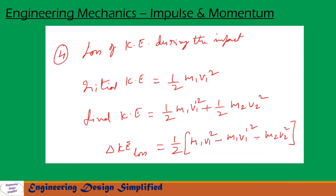Now let us see the loss of kinetic energy during the impact. The initial kinetic energy of the system is half·m1·v1², and the final kinetic energy is half·m1·v1′² + half·m2·v2². Therefore, the loss of kinetic energy during impact equals half·(m1·v1² − m1·v1′² − m2·v2²).